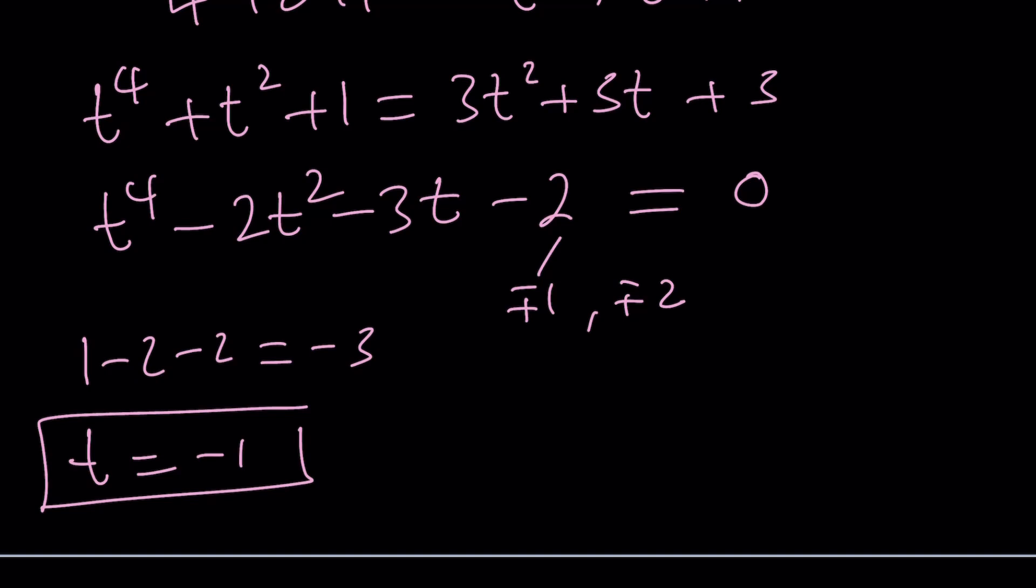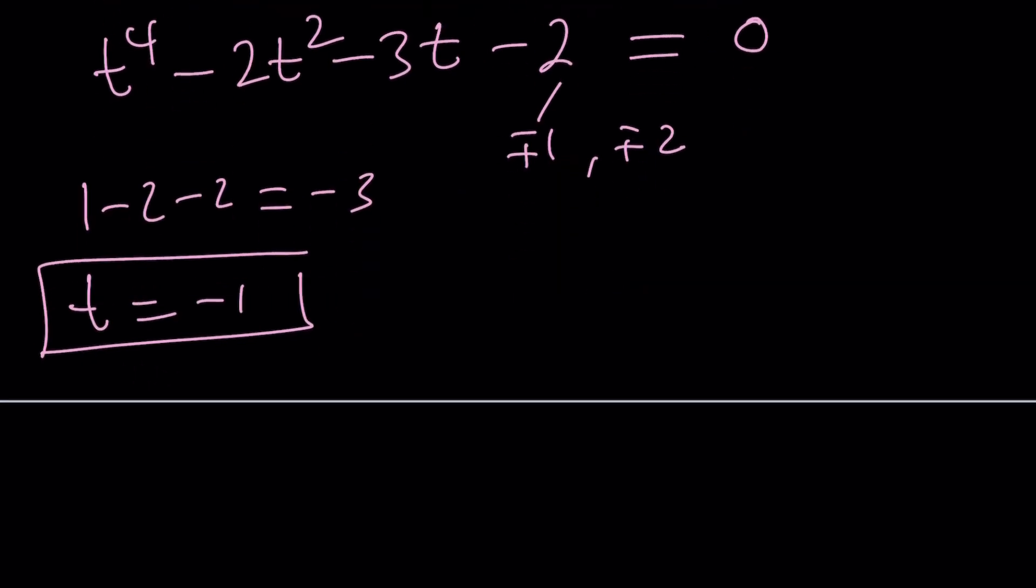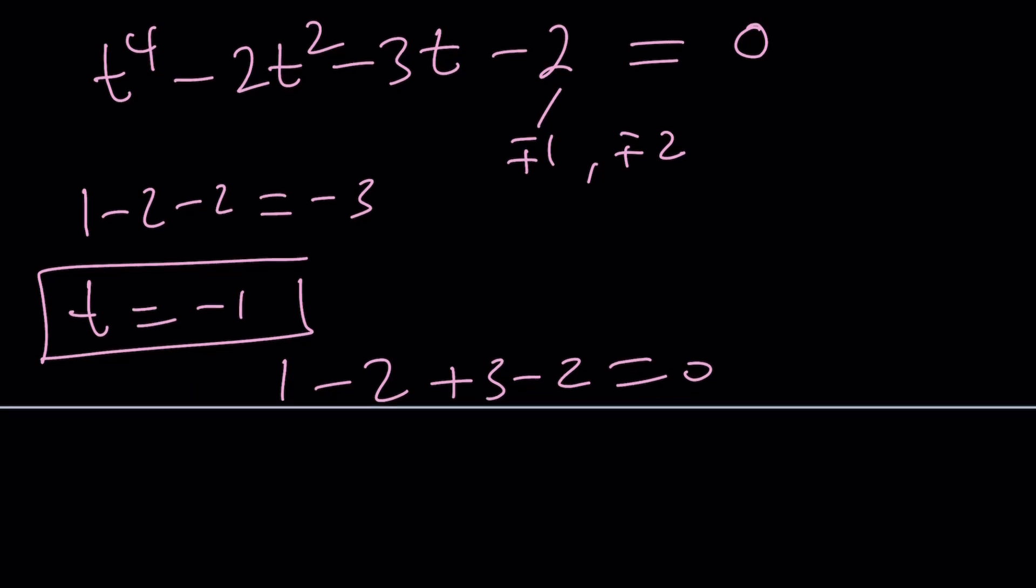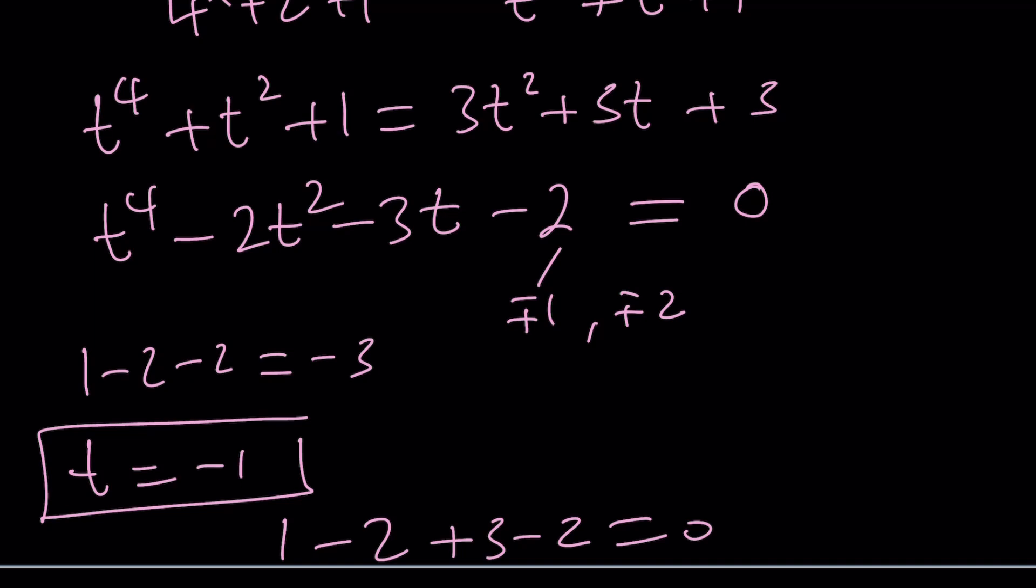Why? Let's go ahead and find out if you plug in negative 1 you get 1 minus 2 plus 3 minus 2 that's going to be 0. Awesome. So, t equals negative 1 works which is good and what would happen if we didn't find the rational root then we would have to use either the quartic formula or try to factor it into two quadratics.